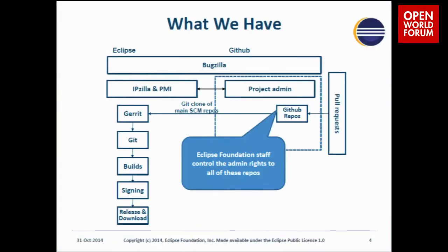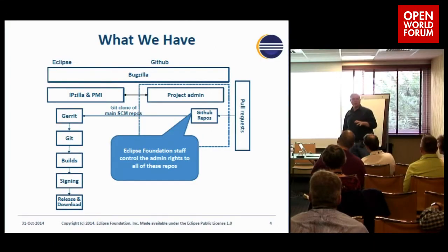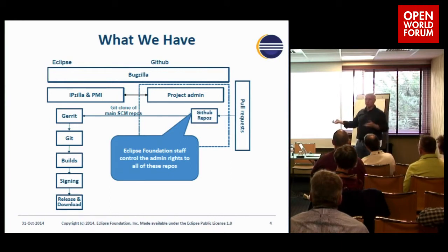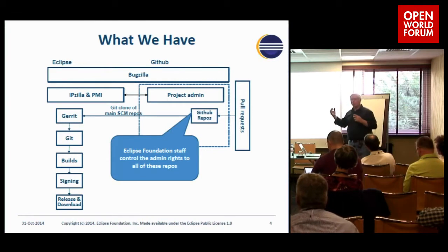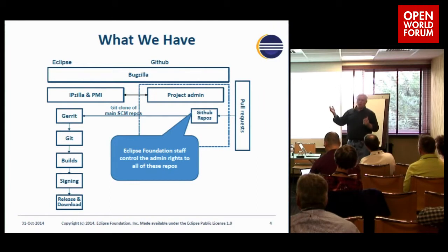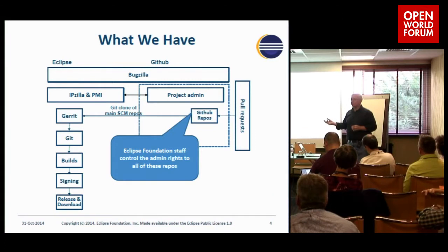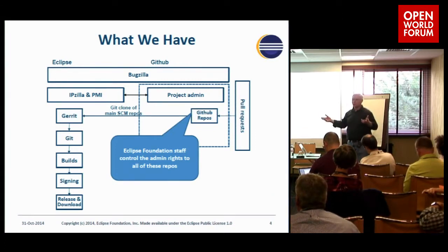One thing to note is that Bugzilla goes all the way across the top. We don't allow our projects to use GitHub issues for a couple of reasons — first of all, GitHub issues mostly sucks. But part of the principle we care about is that when somebody wants to look at an Eclipse project, we don't want them to have to learn 17 different issue trackers to understand what's going on. So we stick with Bugzilla.